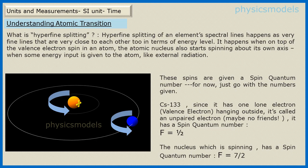Talking of spin, the spins have been given a spin quantum number. The Cs-133 lone valence electron in the outermost orbit gets a spin quantum number f equal to one half, and the spinning nucleus has a spin quantum number f equal to 7 by 2.